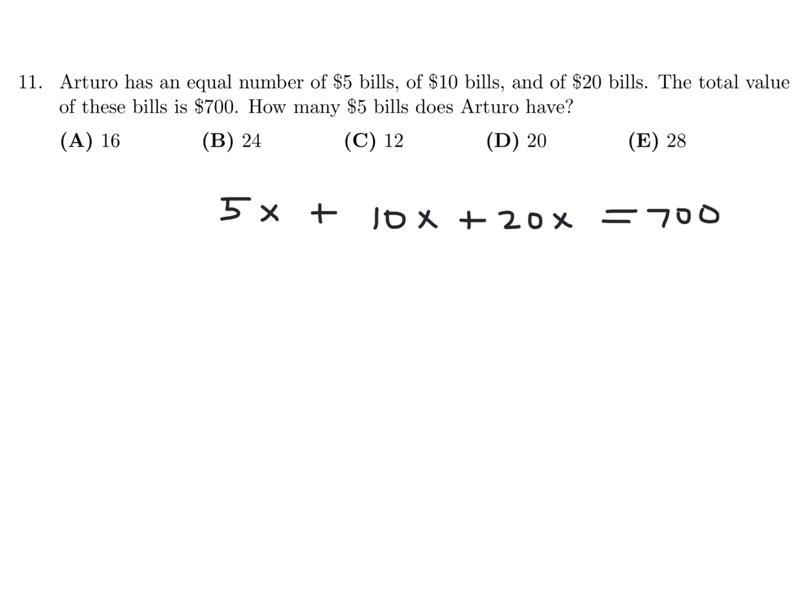Correct. So if you add this up, that's 35X equals 700, and therefore X would be equal to 20. And I think that's all they're asking for. How many $5 bills? Yes, 20 of them. So the answer would be D.